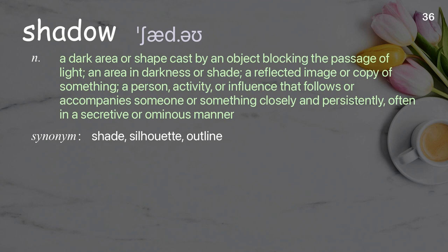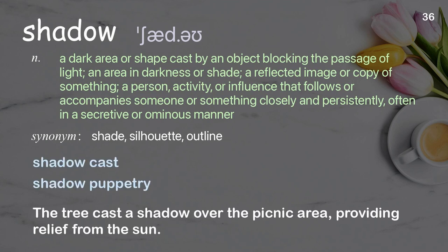Shadow: a dark area or shape cast by an object blocking the passage of light; an area in darkness or shade; a reflected image or copy of something; a person, activity, or influence that follows someone closely. Examples: Shadow cast. Shadow puppetry. The tree cast a shadow over the picnic area, providing relief from the sun.